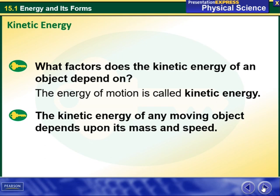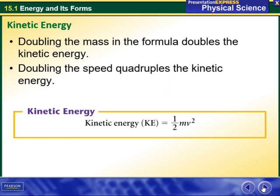What factors does the kinetic energy of an object depend on? The energy of motion is called kinetic energy. The kinetic energy of any moving object depends upon its mass and speed. Doubling the mass in the formula doubles the kinetic energy, while doubling the speed quadruples the kinetic energy.